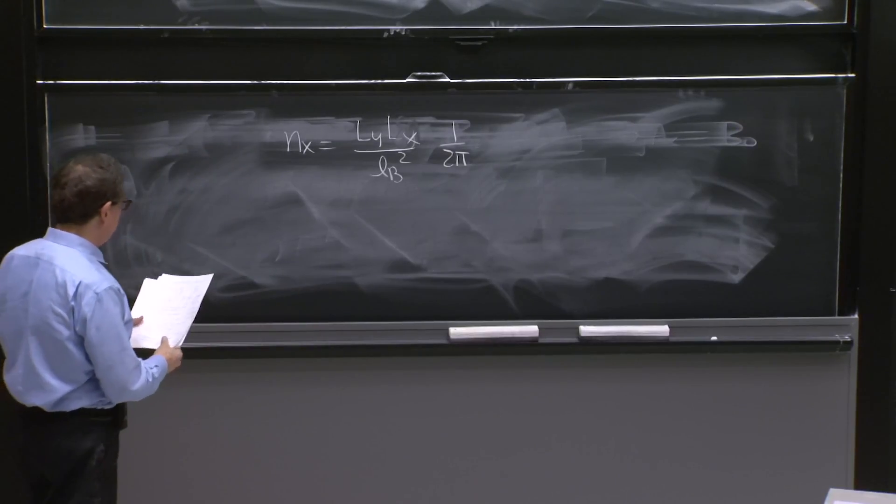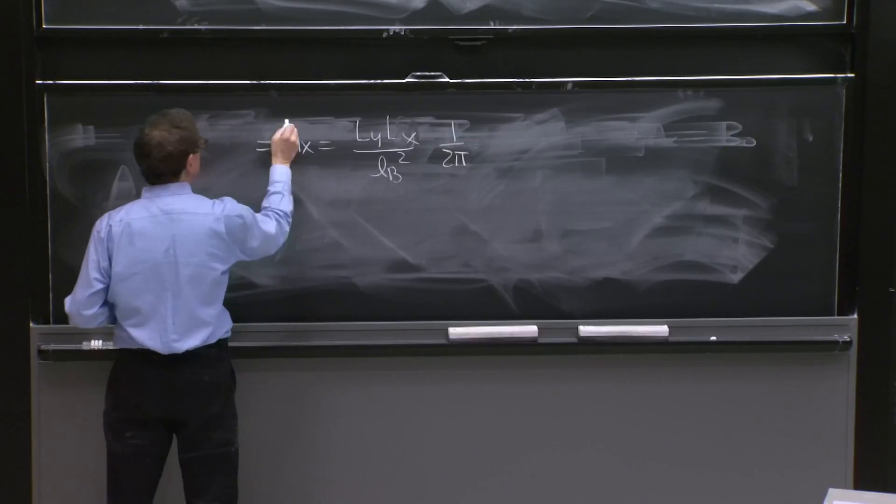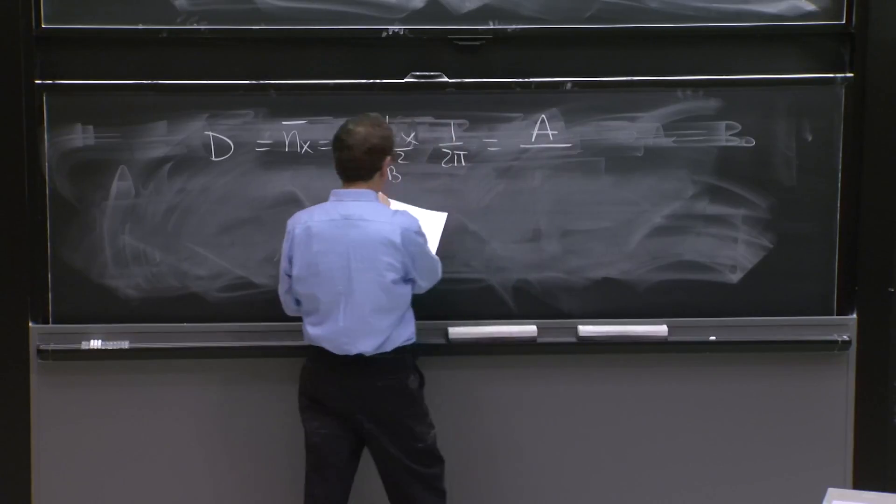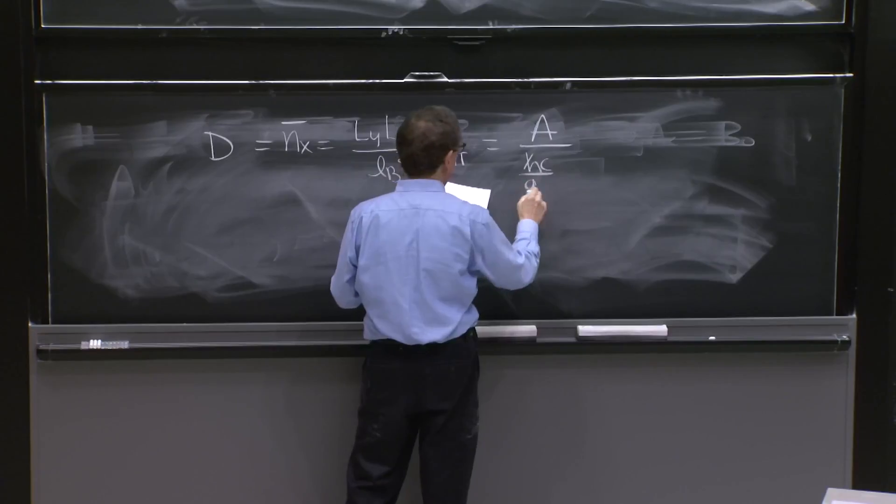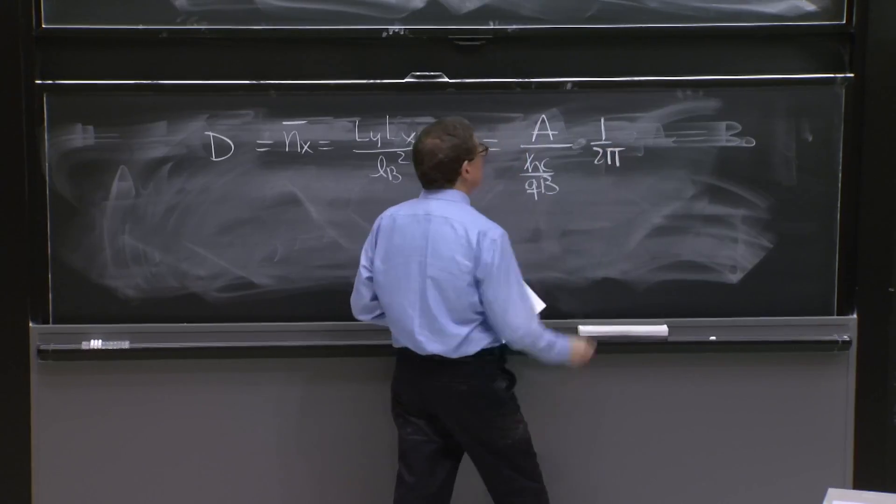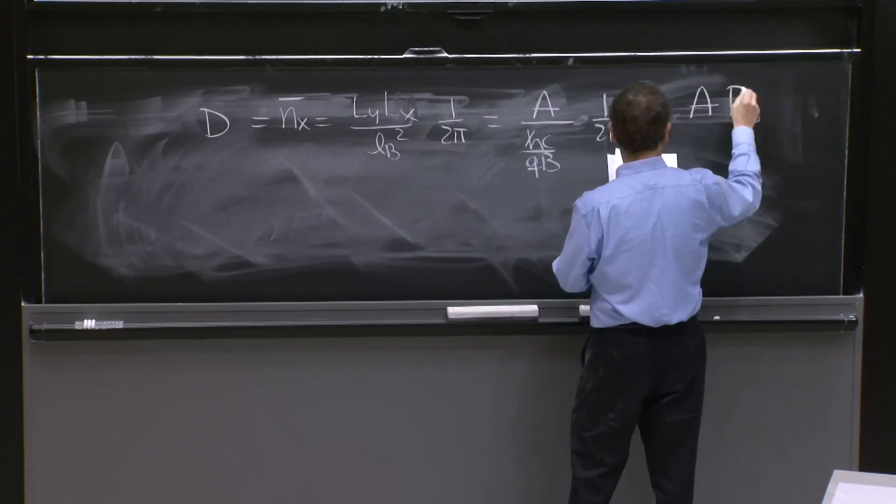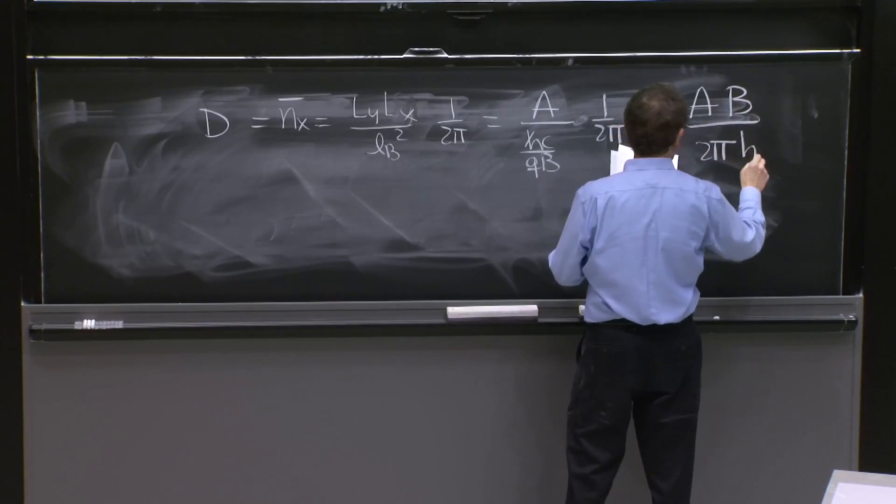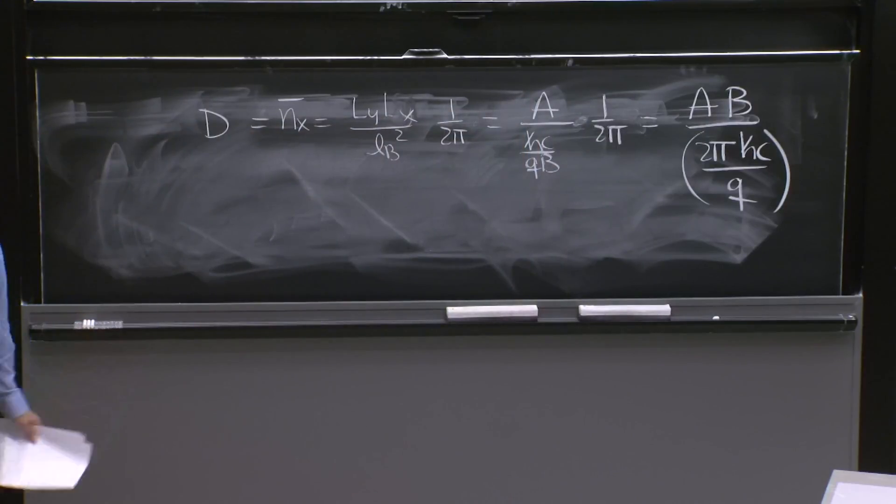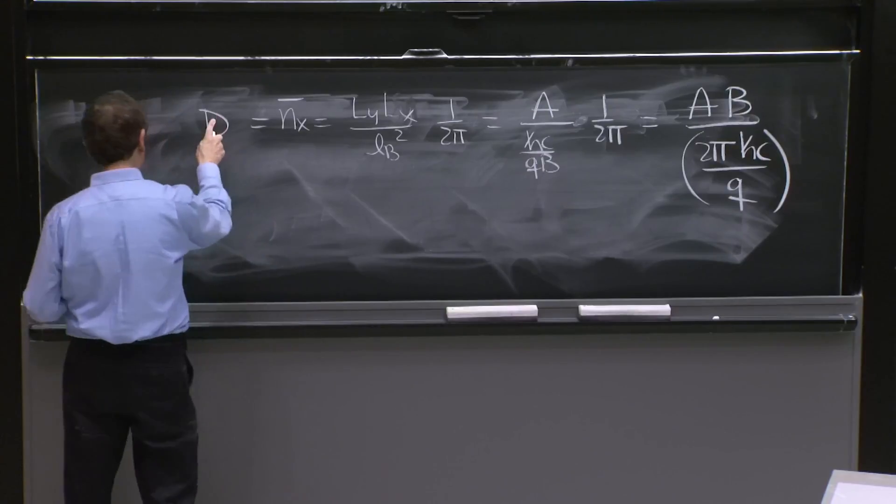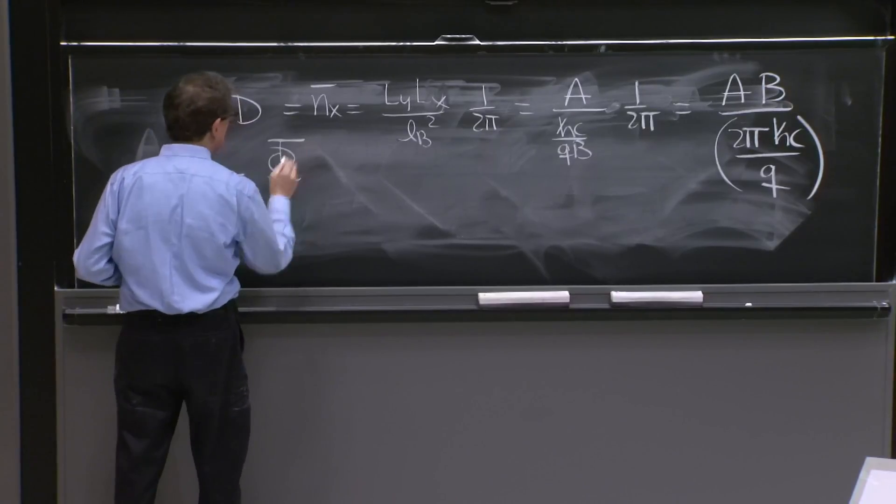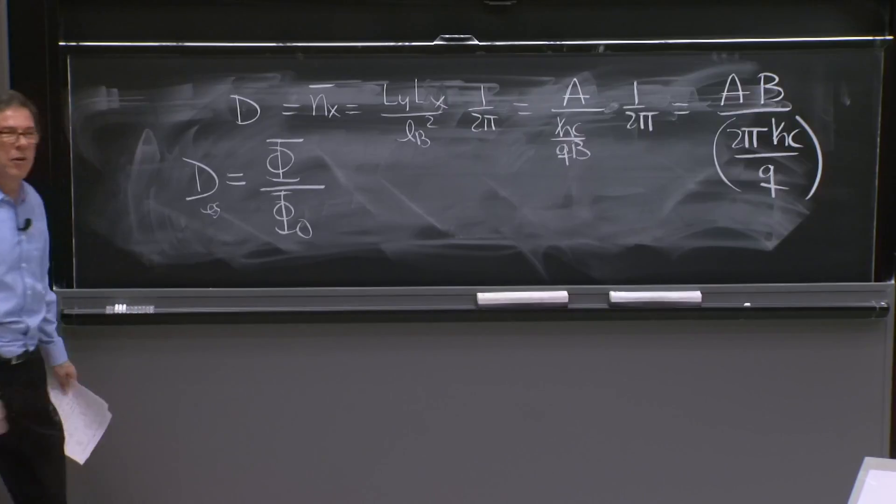N_x is L_y*L_x over L_b^2 over 1 over 2π. So n_x is the degeneracy. This is the degeneracy. And it's equal to the area divided by L_b^2, which is ℏc over qB times 1 over 2π. So it's equal to area times B divided by 2πℏc over q. So we're back to the kind of thing we were saying before, in which the degeneracy is equal to the flux divided by the flux quantum that we figured out earlier today.